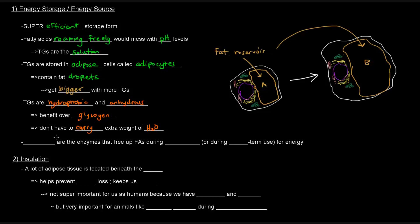Once we have these triglycerides in the storage form, let's say someone wants to lose some weight, or even if they don't want to lose weight, maybe if someone's fasting. There are times where we can take these stored fatty acids that are stored in these triglycerides, and we can mobilize them for energy. We can free them up. So, there are enzymes called lipases. Lipases are the enzymes that free up fatty acids during fasting or during long-term use for energy. When you're fasting, your body is tapping on fats for energy.